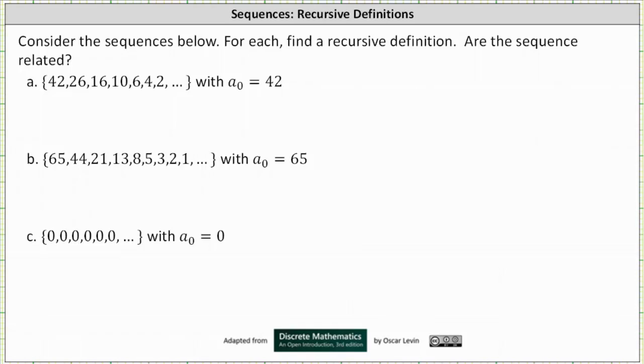So analyzing the first sequence in A, if we take a look at the latter terms, or the terms on the right, the first thing I recognized was that 2 plus 4 is 6, 4 plus 6 is 10, 6 plus 10 is 16, and so on. So while that is a pattern, we do want to find a recurrence relation that relates one term to previous terms, not future terms.